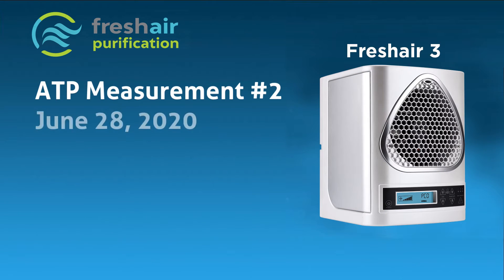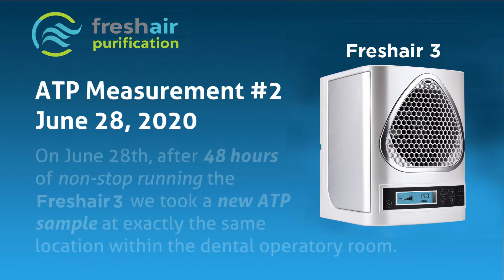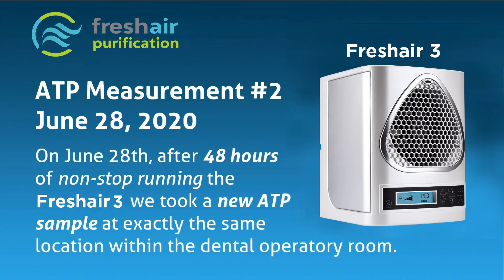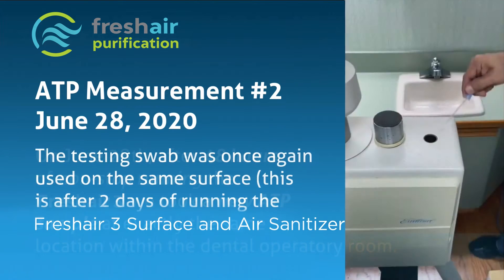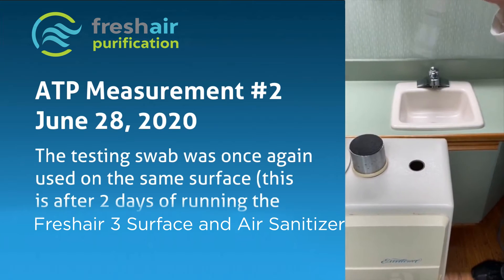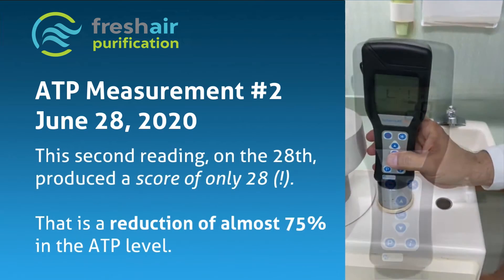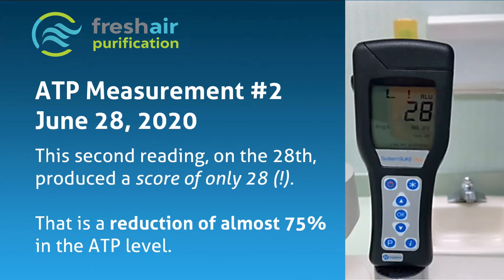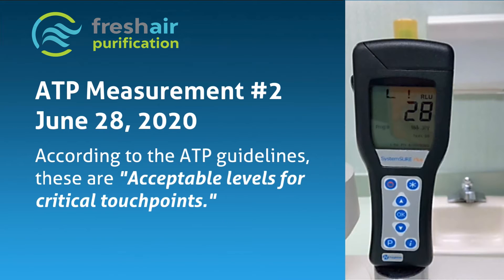ATP Measurement 2. On June 28, 2020, after 48 hours of non-stop running the Fresh Air 3, we took a new ATP sample at exactly the same location within the dental operatory room. The testing swab was once again used on the same surface, after two days of running the Fresh Air 3 surface and air sanitizer. The second reading produced a score of only 28 — a reduction of almost 75% in the ATP level. According to ATP guidelines, these are acceptable levels for critical touchpoints.